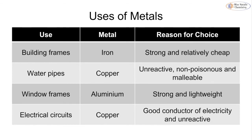For window frames we tend to use aluminium because it is very strong but also very light. We also use aluminium for aeroplanes for the same reason — it is very strong but quite lightweight, which allows the plane to not be too heavy. In electrical circuits we again use copper, because it is not only unreactive but also one of the very best conductors of electricity on the periodic table.